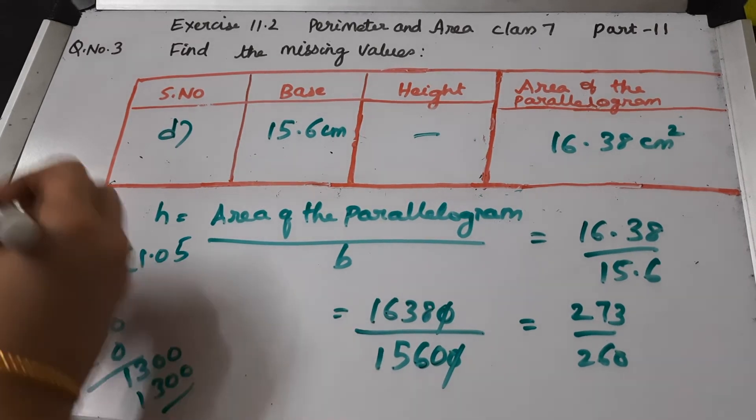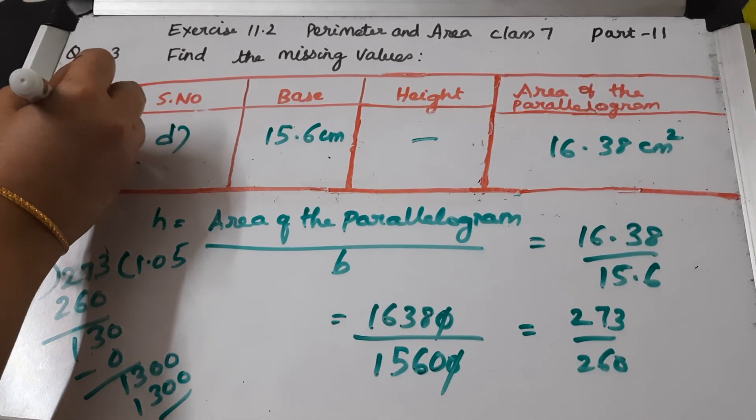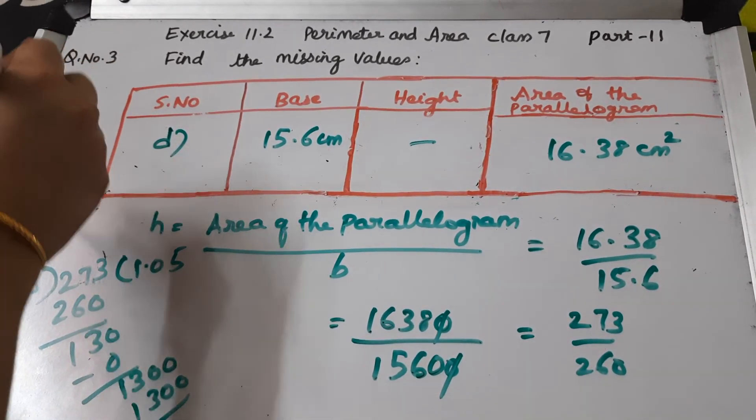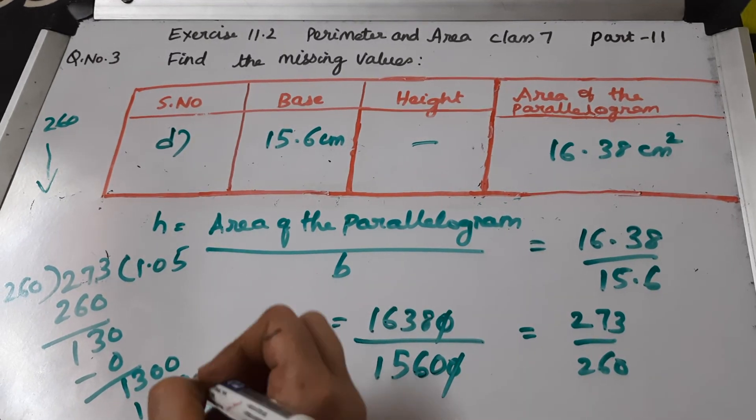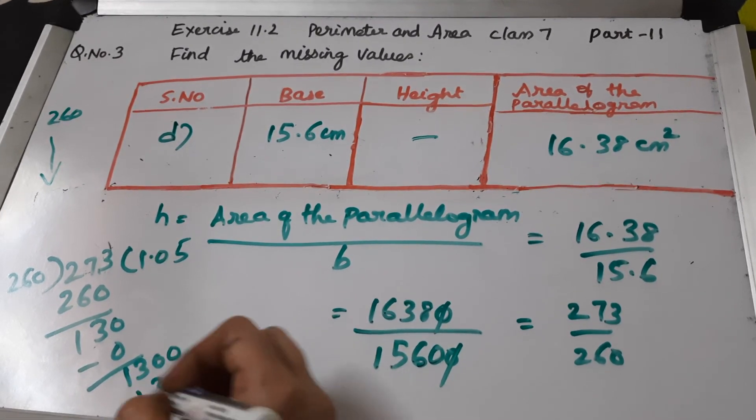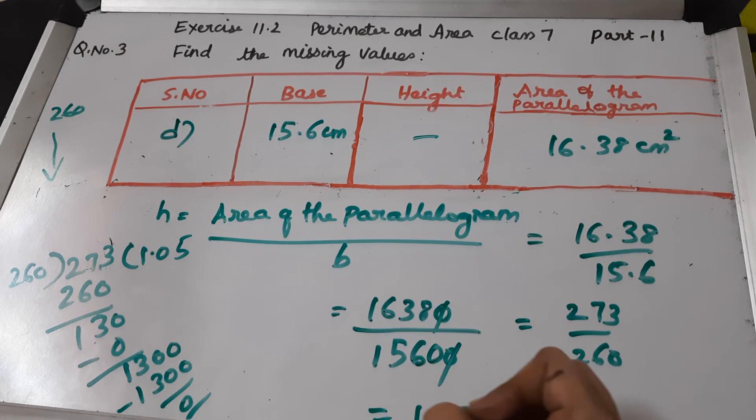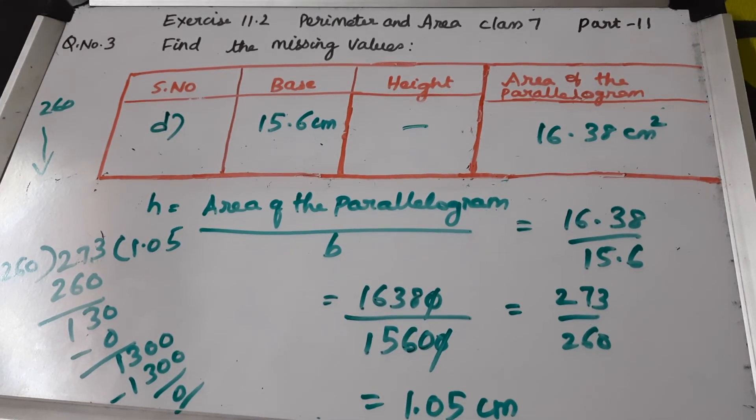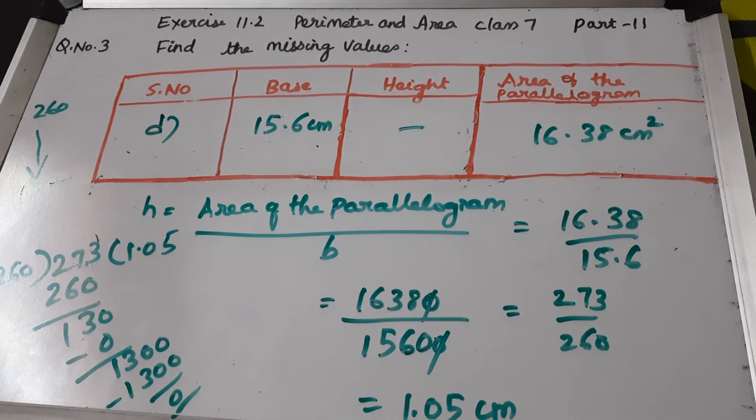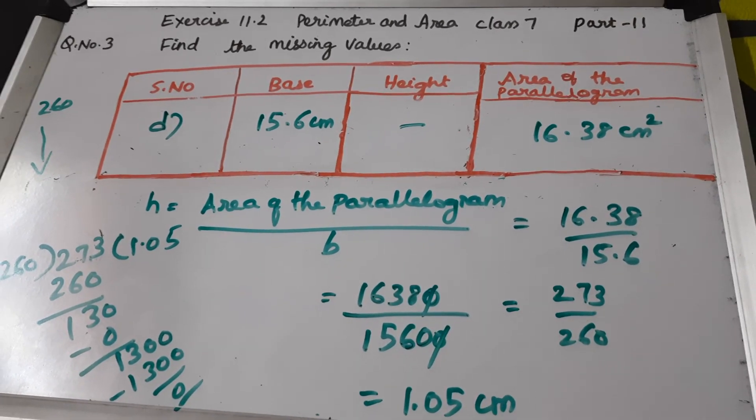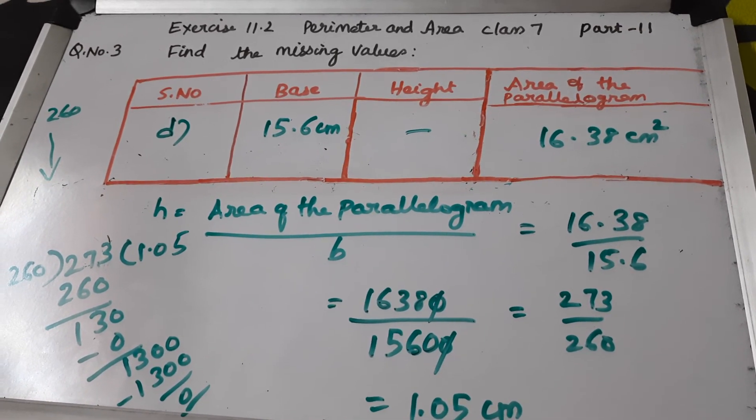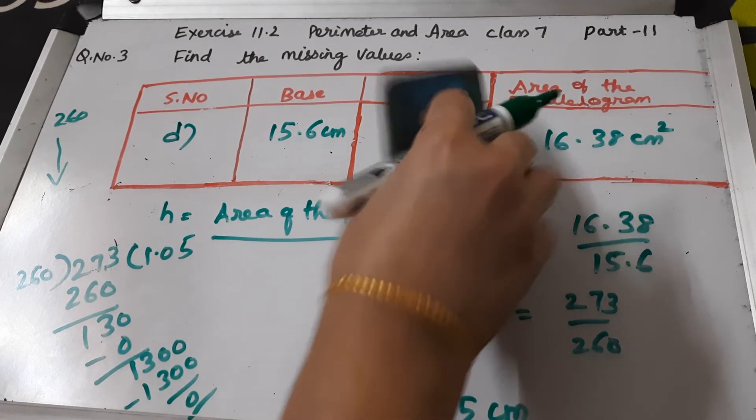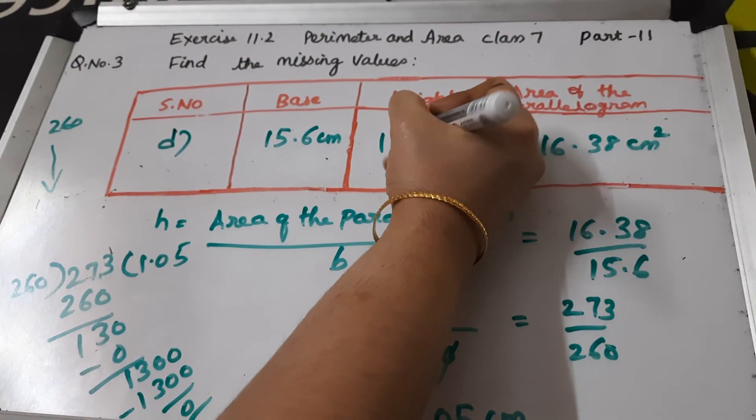I know that 260 into 5 is 1300. You can calculate. If you want, you can write here 260 times 1, times 2. You can calculate and write. So the answer is 1.05 centimeters. This is the simplest way to calculate. After simplification, you have done the division part. So this is the answer, 1.05 centimeters.